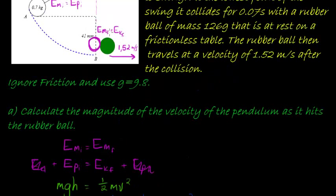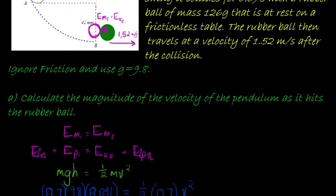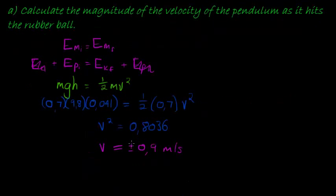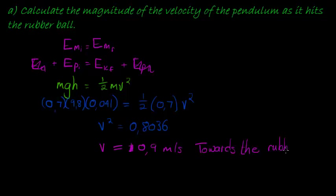The plus or minus doesn't help us much — all we know is the velocity is towards the rubber ball, so we make it positive and state the direction as towards the rubber ball. That is the answer to question A.